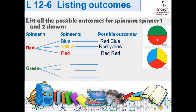We started with spinner one and red. Spinner one has green and red; there's no blue or yellow in the first spinner. So if we spin spinner one and two together, spinner one gives red and green; spinner two gives blue, yellow, red. Each time we spin both, we could have red and blue, red and yellow, or red and red.